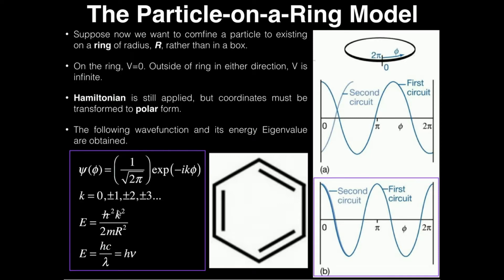We also see this k appearing in the energy eigenvalue. This is important. The energy is equal to h-bar squared times k squared divided by 2mr squared. R is the radius of this ring, and m is the mass of the particle that's confined on the ring. So it's a pretty straightforward calculation. We can also use this formula. The energy is equal to h Planck's constant times the speed of light divided by the wavelength, which is also equal to the Planck's constant times the frequency of the particle. We can use this to calculate the wavelength of light required to induce some kind of electronic transition.